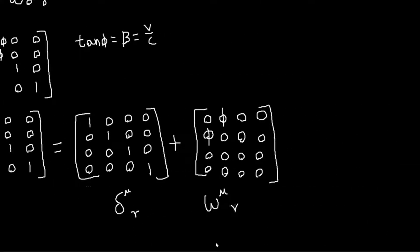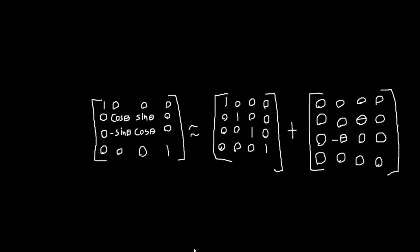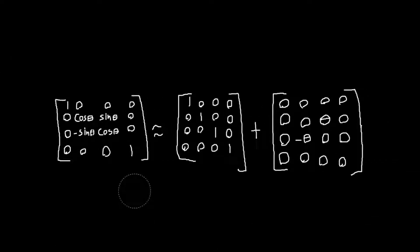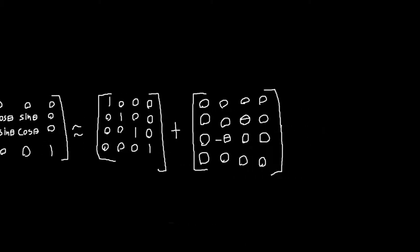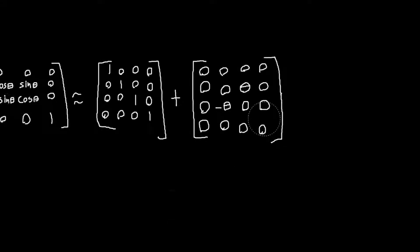And so similarly, we can do the same thing for our rotation about the z-axis. So this is our usual rotation matrix. And if I... I can again do the same thing. If theta is really small, then cosine of theta is one. Sine of theta is theta. So I can again expand it out like this. And this will be our delta mu nu. This will be our w mu nu. And so it is also anti-symmetric. So if I apply... if I lower the index here, I will get w mu nu with both indices lower, which will also be anti-symmetric.